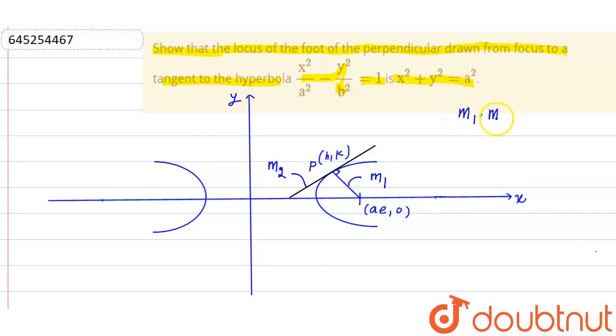Let's say the slope of the tangent is m1 and the slope of the perpendicular is m2, so m1 × m2 = -1, because they are perpendicular to each other.